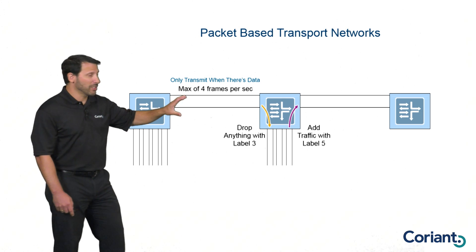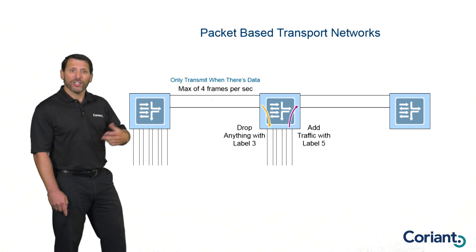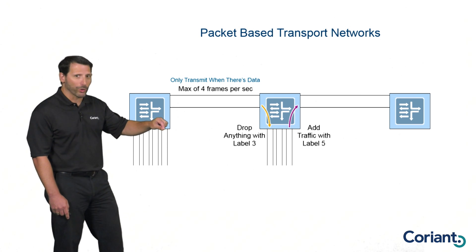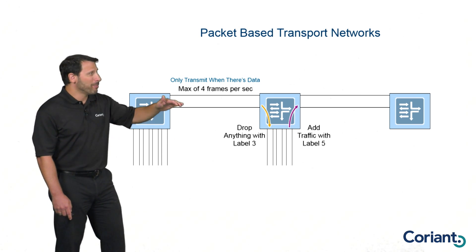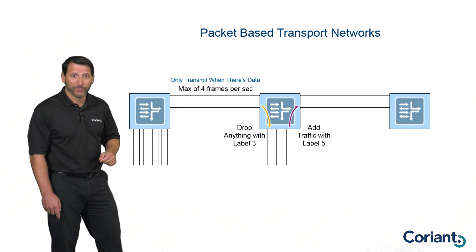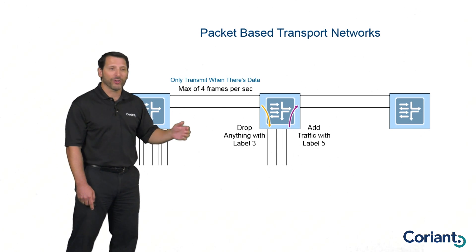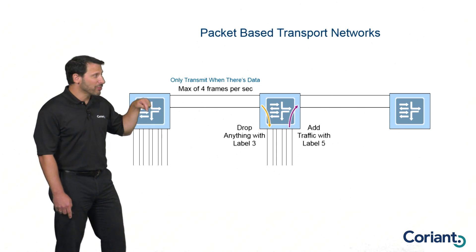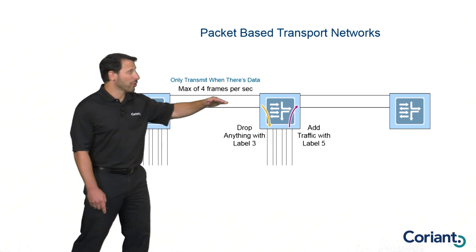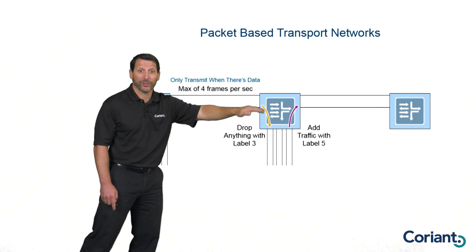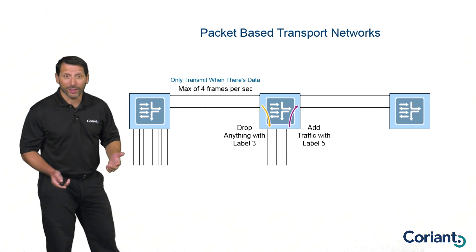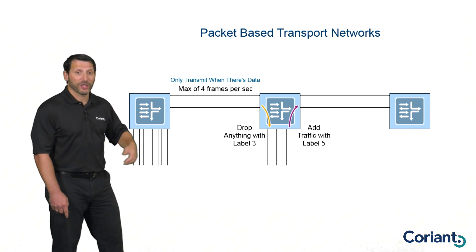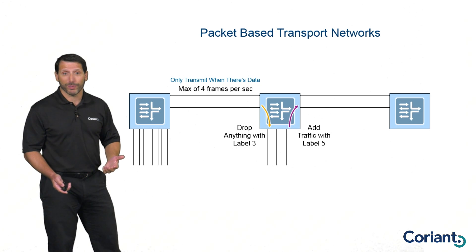The benefit of using labels is that I can more flexibly use the bandwidth on this pipe, and I'm not restricted on a per-port basis. With circuit-based networks, I look at everything on a port and just take all of it and map it into a time slot. With packet-based networks, I can actually read the individual labels. This enables me to take traffic from an individual port and steer traffic with different labels to different destinations. On one physical port coming in, I can drop some traffic, send some through in pretty much any bandwidth and any direction — so it's not only significantly more flexible, it's also significantly more efficient.